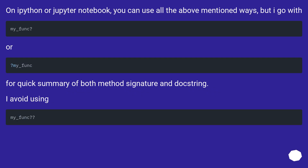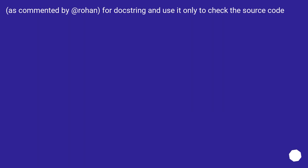On IPython or Jupyter Notebook you can use all the above mentioned ways, but I go with `?`. For a quick summary of both method signature and docstring, I avoid using `??`, as commented by Rohan, for docstrings, and use it only to check the source code.